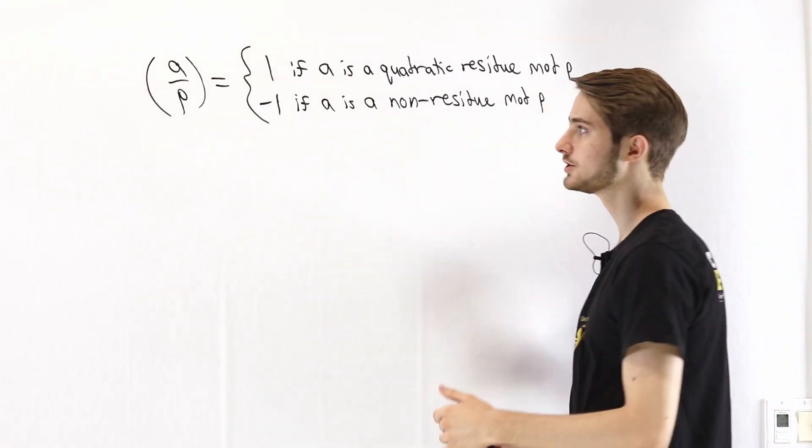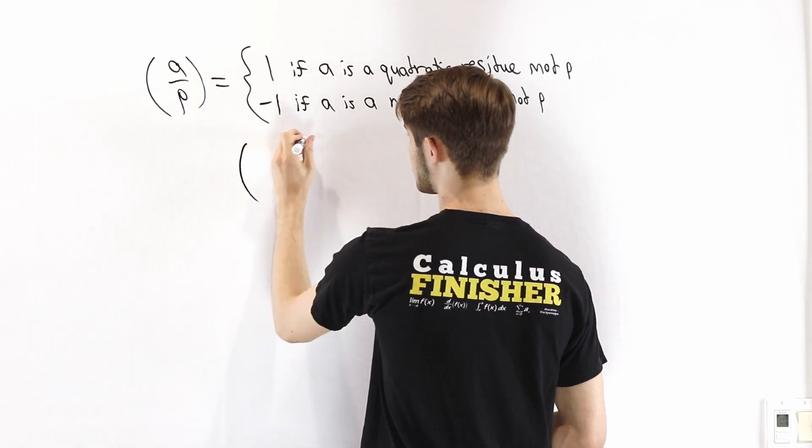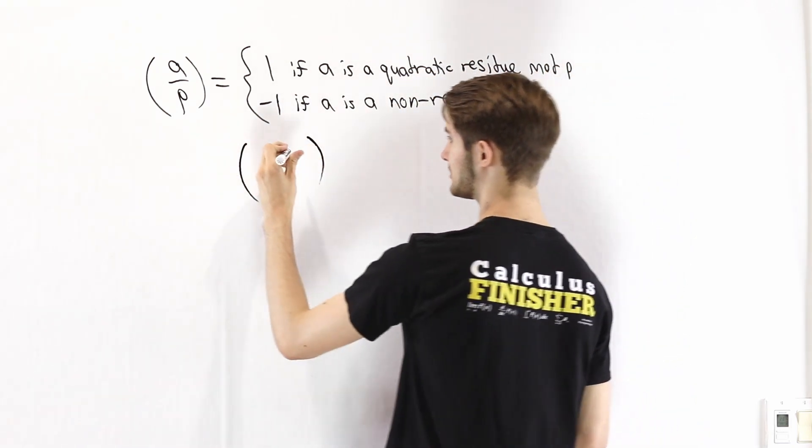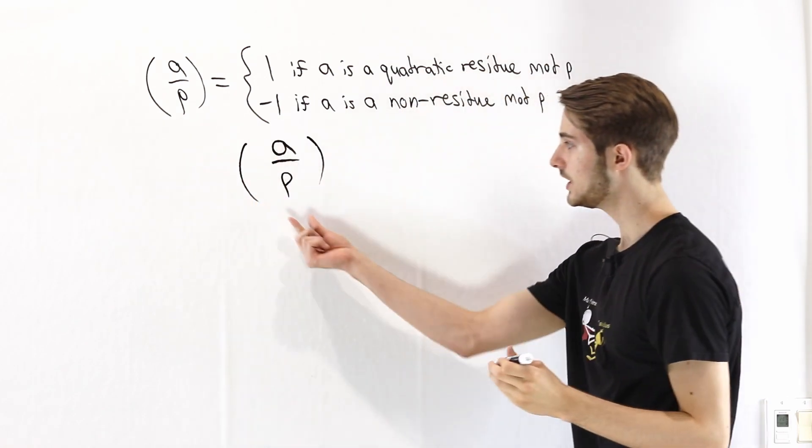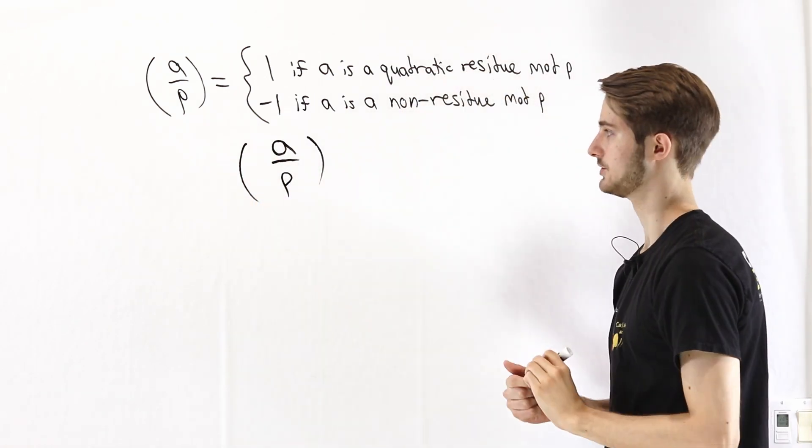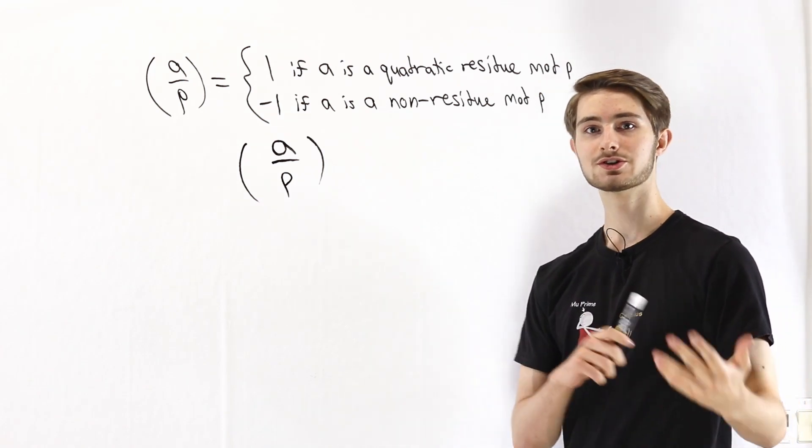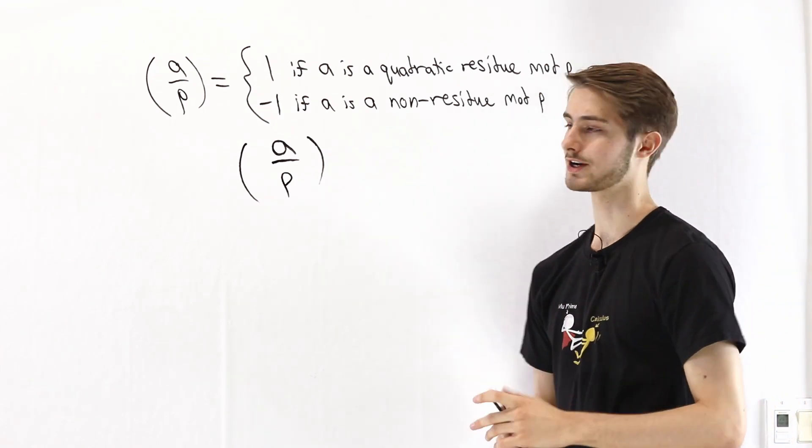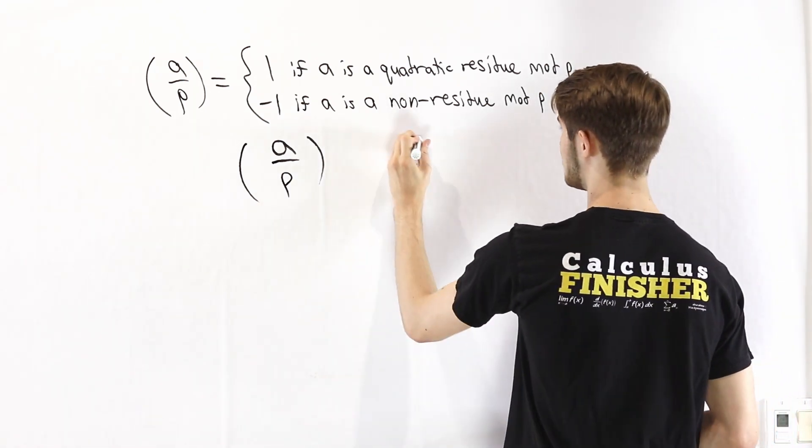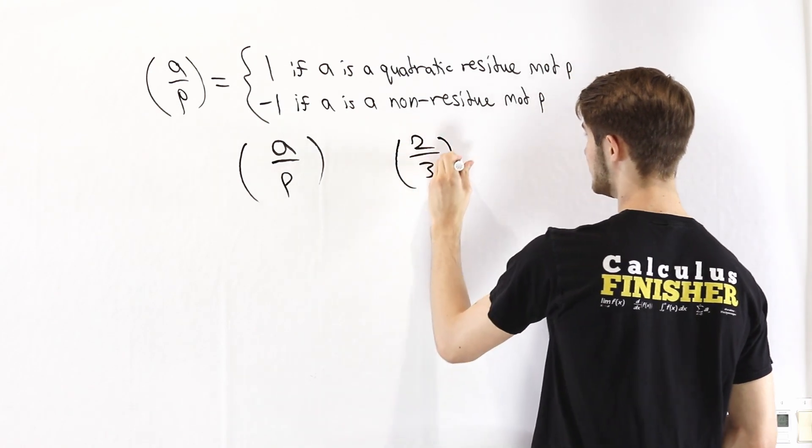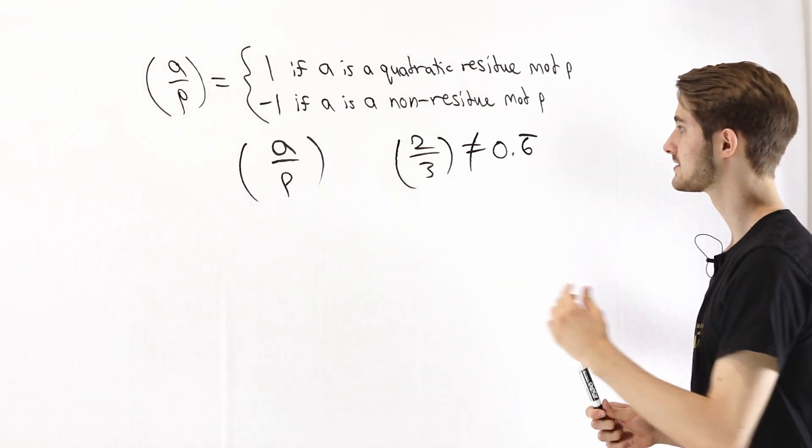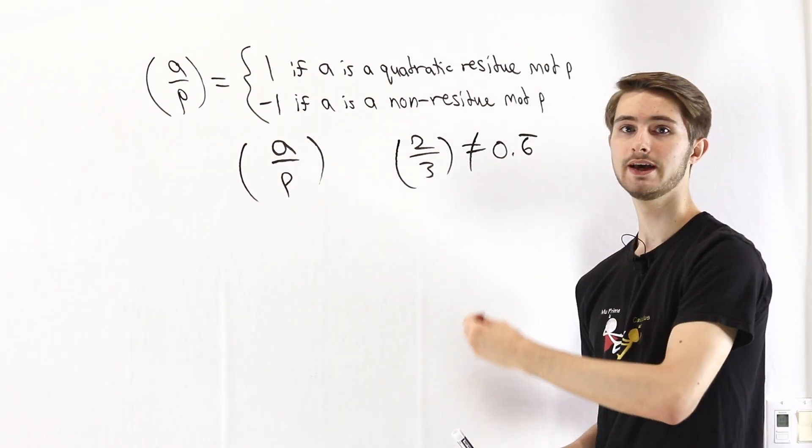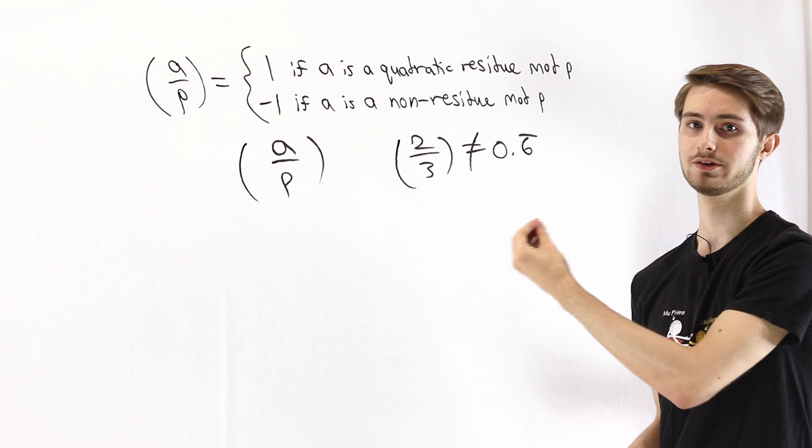We denote the Legendre symbol as parentheses around the entire notation. We put the number on top and the modulus on the bottom with a bar in between. Notice that this looks a lot like a fraction, but it's not actually a fraction. For example, if we put 2 on 3 like this, this is not equal to 0.6 repeating. It's not two-thirds. It's asking is 2 a quadratic residue mod 3.